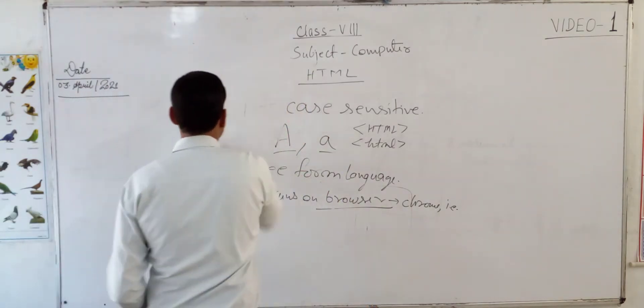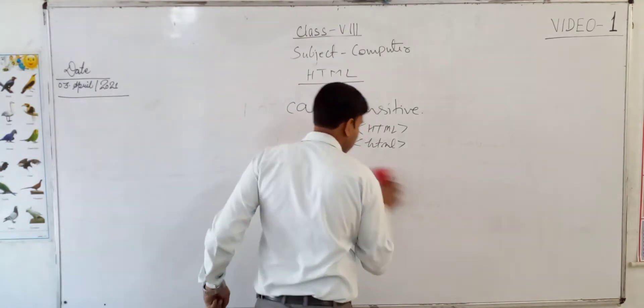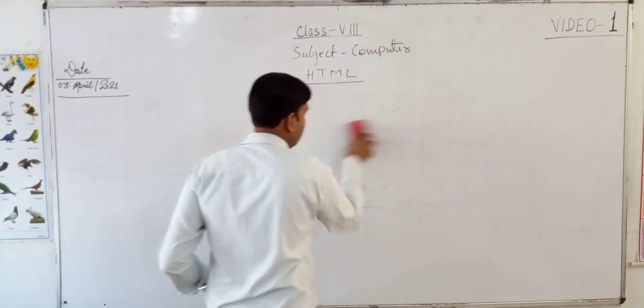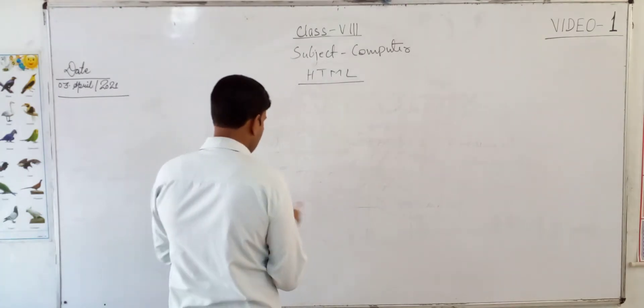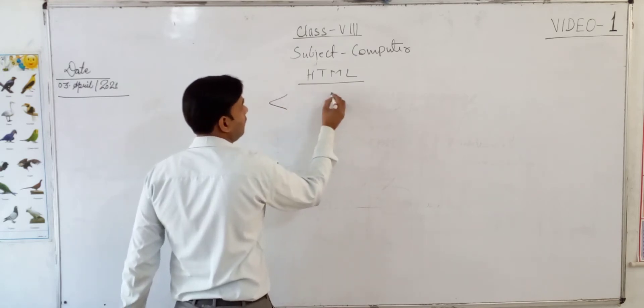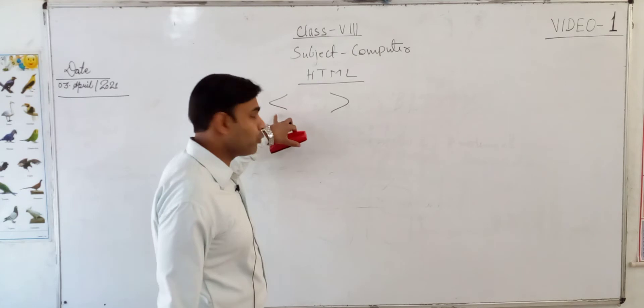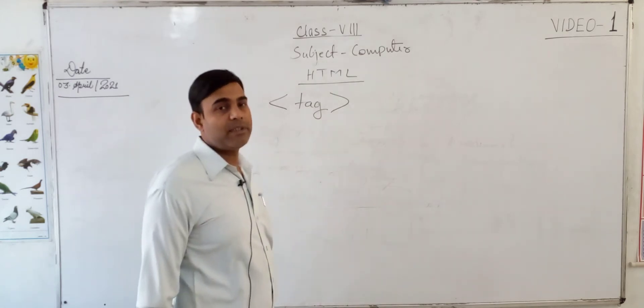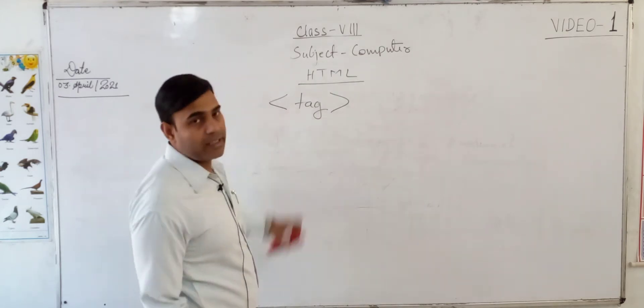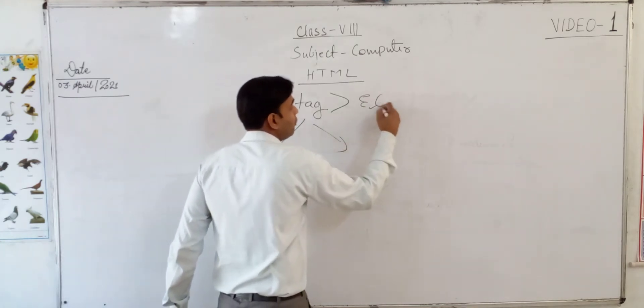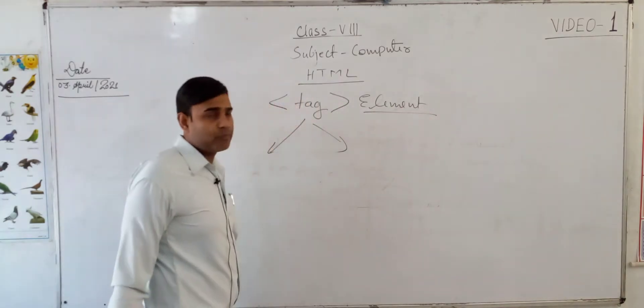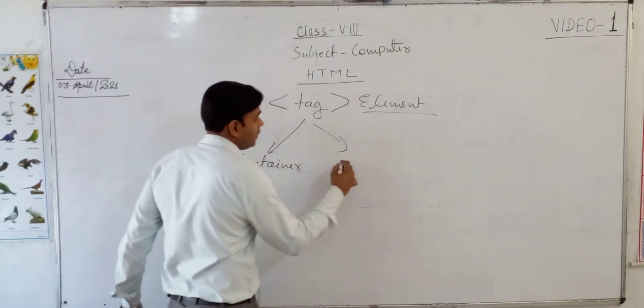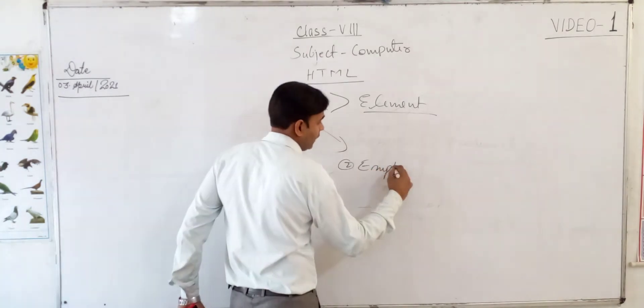Actually, HTML is a tag-based language. Now you must be thinking what is a tag. Let me show you. Tags are enclosed within angle bracket - small than symbol and greater than symbol. In between we write HTML. That is a tag-based language. Tags are of two types: first is container and next is empty. Container and empty tags.